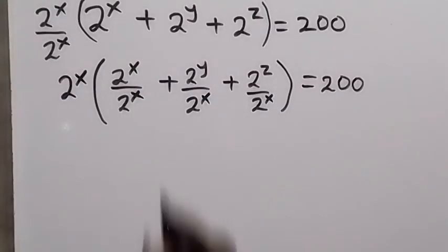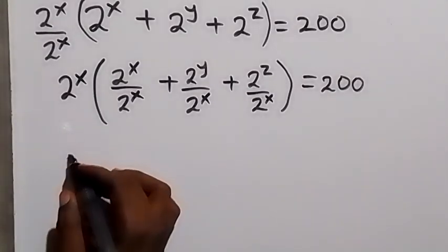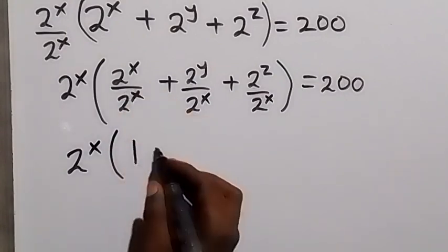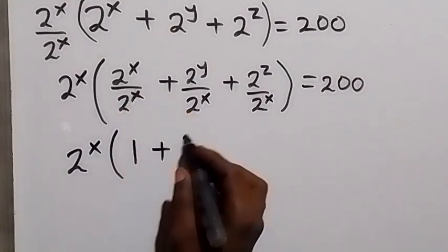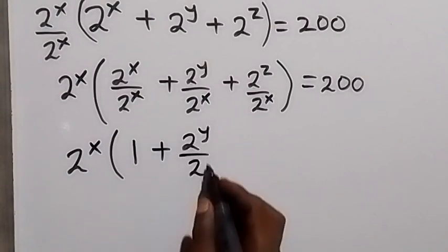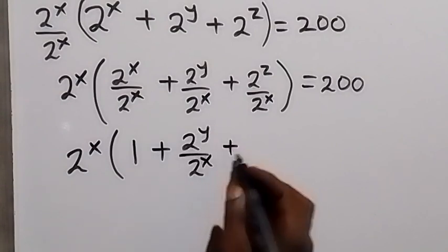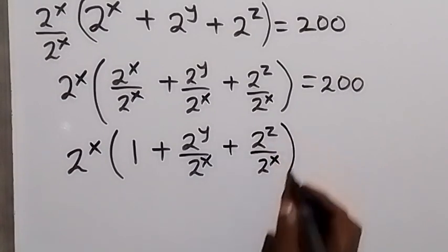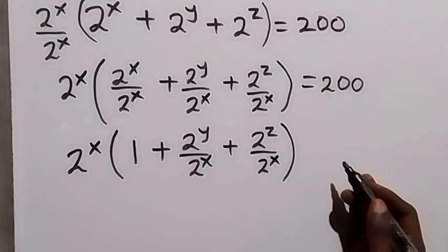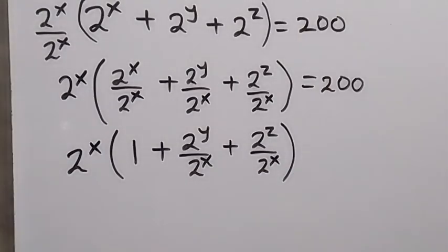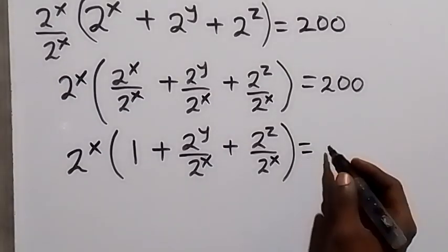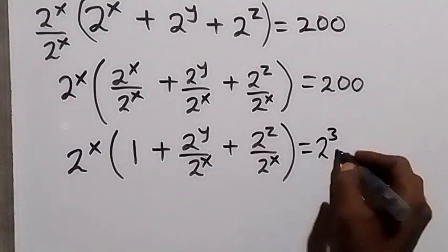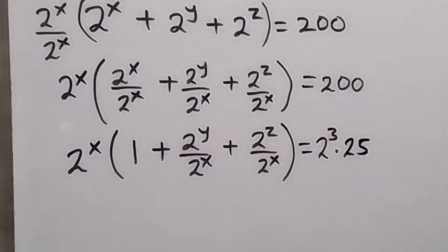In the next step we rewrite this as 2 raised to power x into brackets: 1 plus 2^y over 2^x plus 2^z over 2^x. Here we can factor 200 using its prime factorization: 200 equals 2 raised to power 3 times 25, that is 8 times 25.